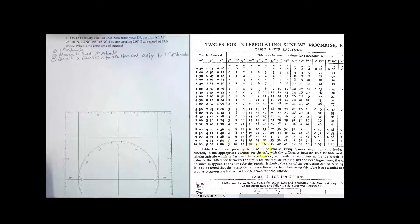And so it says that, like I said, it's a little bit cryptic. Table one is interpolating for the local mean time of sunrise, twilight, moonrise, etc. For latitude, it is to be entered in the appropriate column on the left with the difference between the true latitude and the nearest tabular latitude which is less. That's this column over here, these numbers here. And also with the argument at the top, which is the nearest value of the difference between the times of the tabular latitude and the next higher one. The correction so obtained is applied to the time of the tabular latitude.